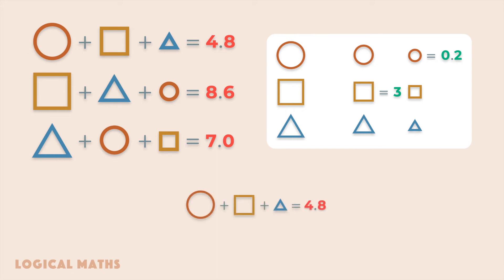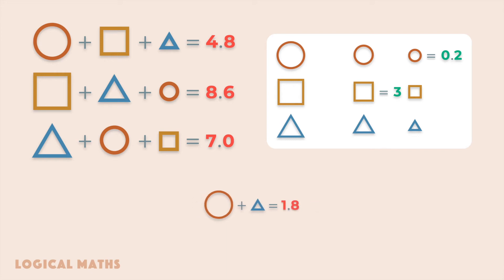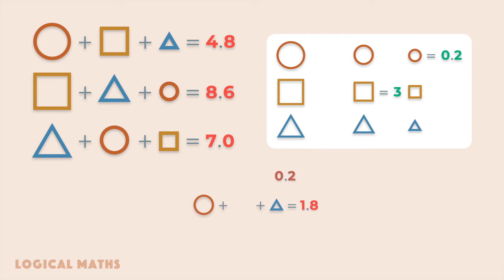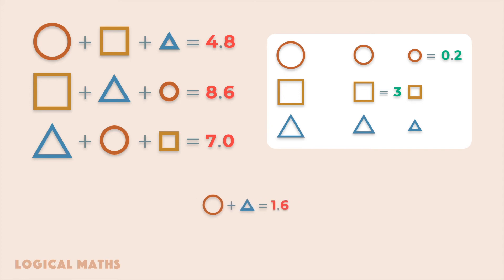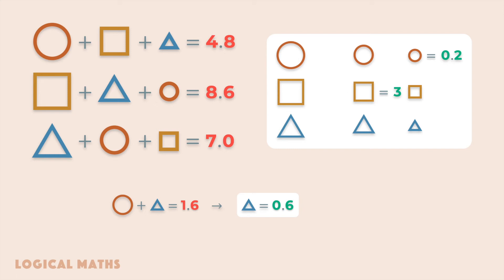Let's move on to the first equality. We can replace the medium square with its value, so we get that large circle plus small triangle equals 1.8. Then we replace the large circle with the sum of medium and small circles, and substitute the known value of the small circle. Thus, medium circle plus small triangle equals 1.6. This means that the small triangle represents the number 0.6 and the medium circle represents the number 1.